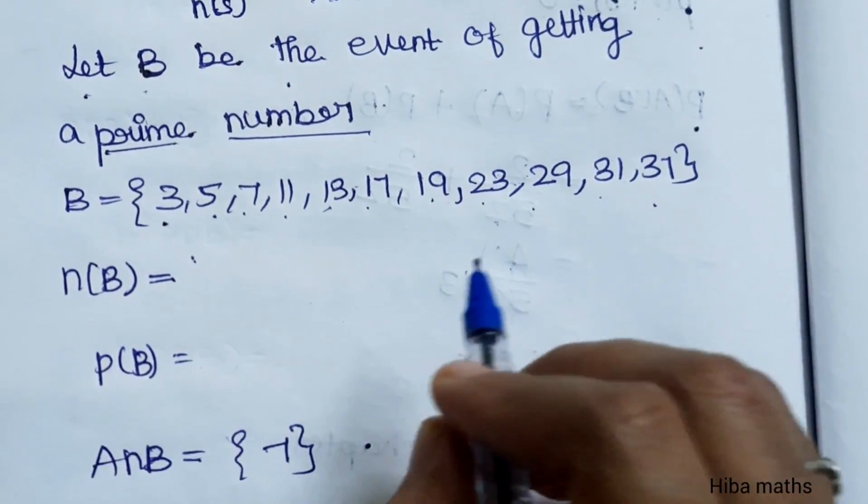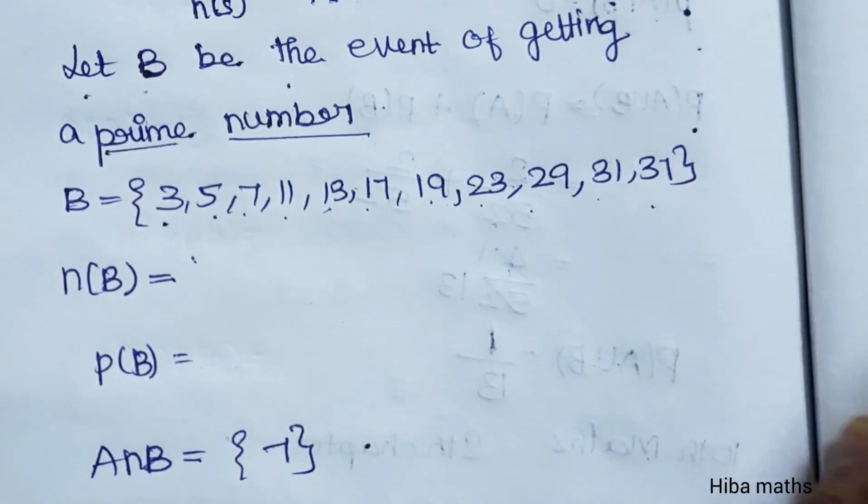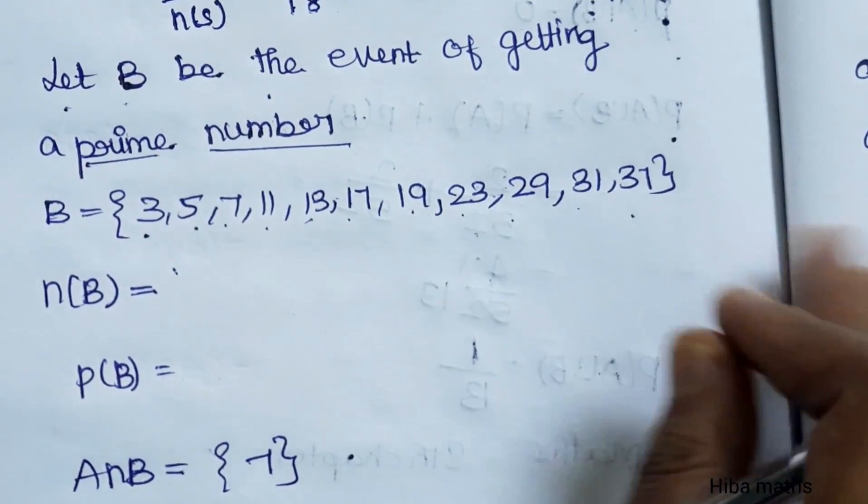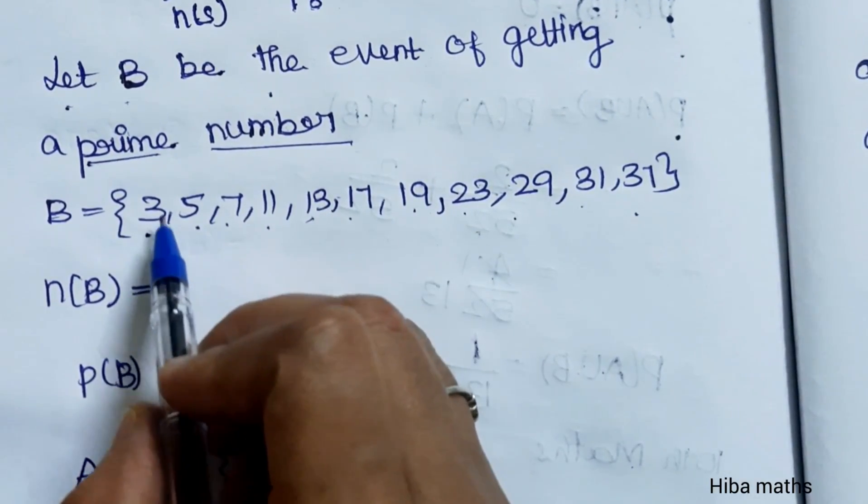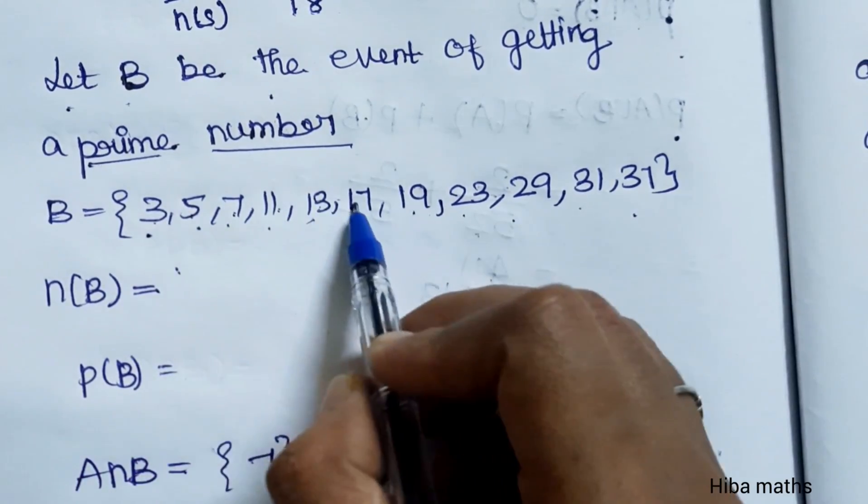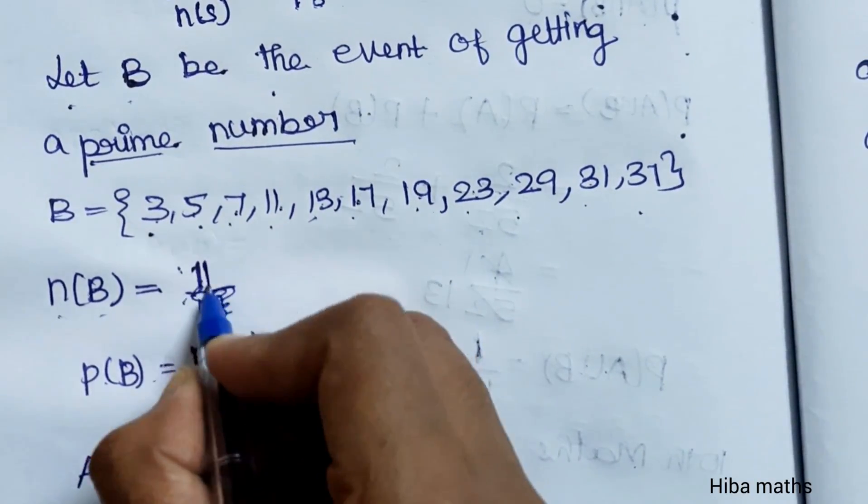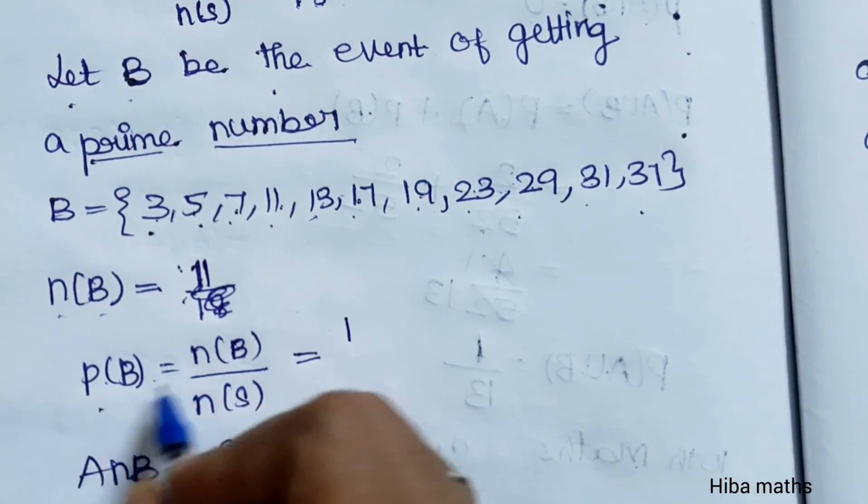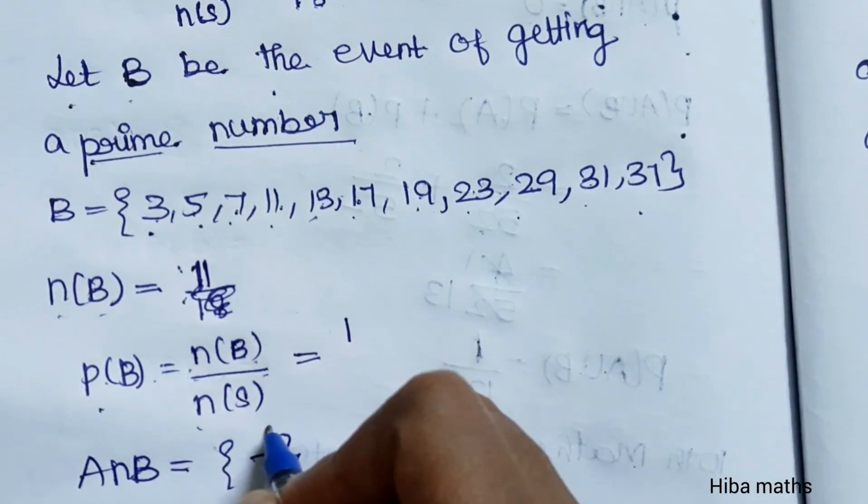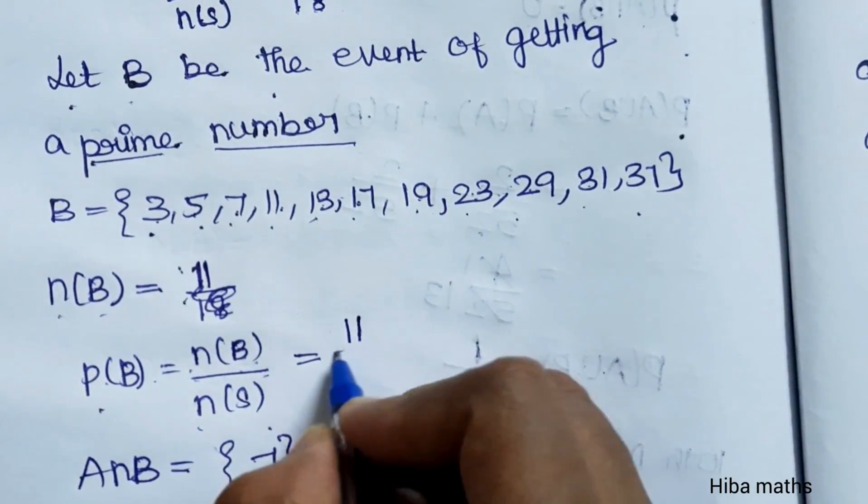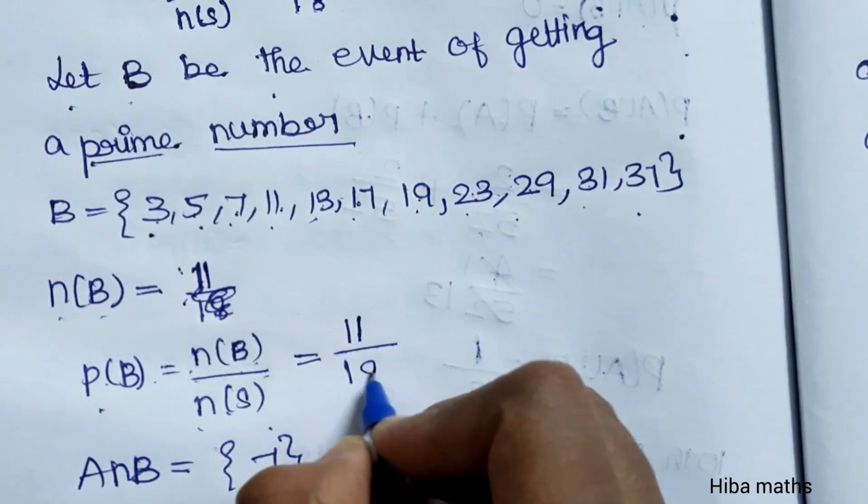Counting the prime numbers: 1, 2, 3, 4, 5, 6, 7, 8, 9, 10, 11. So n(B) is 11. The probability P(B) = n(B) by n(S) = 11/18.